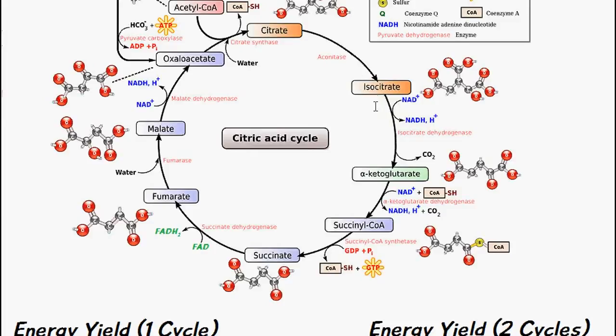It's the conversion of isocitrate to alpha-ketoglutarate and as we can see NAD+ is reduced to form NADH. Another important reaction is the conversion of alpha-ketoglutarate to succinyl-CoA producing NADH. We have the conversion of succinyl-CoA to succinate producing a GTP. We have succinate being converted into fumarate to form FADH2 and finally another NADH being formed from the conversion of malate to oxaloacetate.